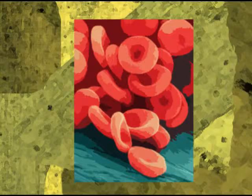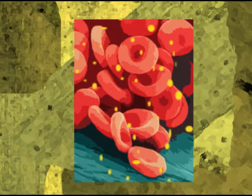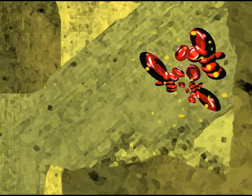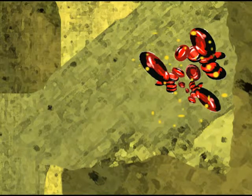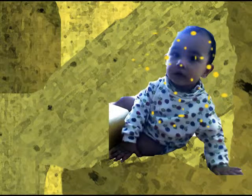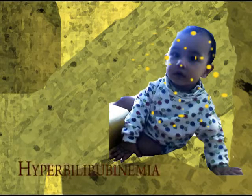Hyperbilirubinemia is a condition in which there is too much bilirubin in the blood. When red blood cells break down, a substance called bilirubin is formed. Babies are not easily able to get rid of the bilirubin, and it can build up in the blood and tissue of the baby's body. This is called hyperbilirubinemia.